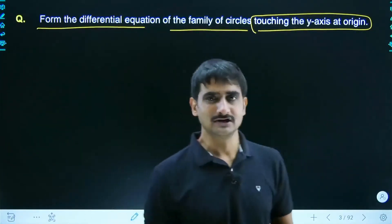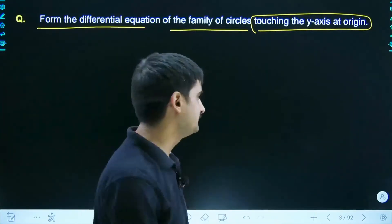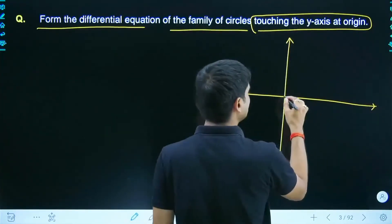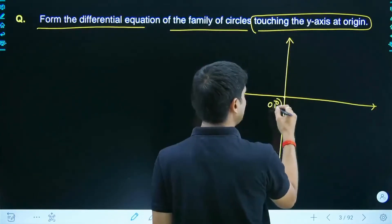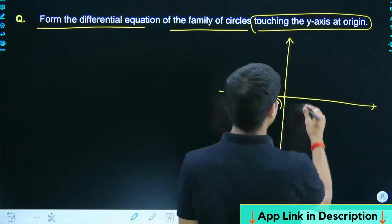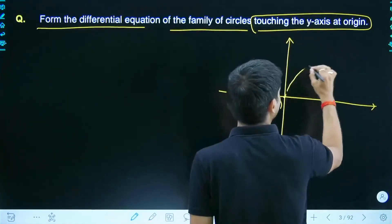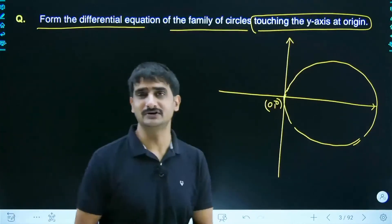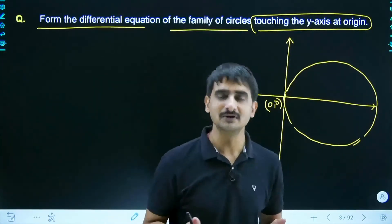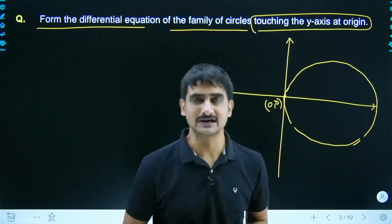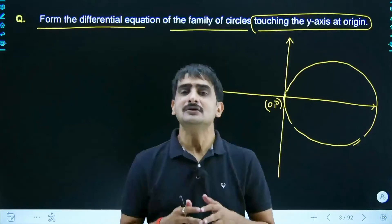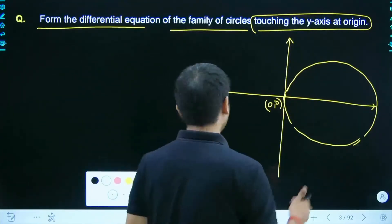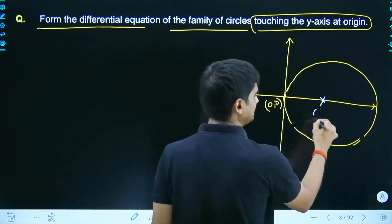All circles ke differential equation banana hai — y-axis ko origin pe touch karne ke liye, the circle touches the y-axis at the origin. The center of the circle will lie on the x-axis, because since it touches the y-axis, the y-axis is the tangent to the circle at the origin, so the tangent's perpendicular at the point of contact passes through the center.